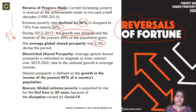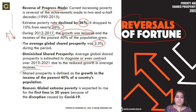Shared prosperity is going to diminish because average income is not going to be able to grow — in fact, there is a decline in average income. Shared prosperity will stagnate or even contract over the period of 2019 to 2021 due to reduced growth in average incomes during COVID-19. Shared prosperity means the income growth of the poorest 40% of the people of a country.